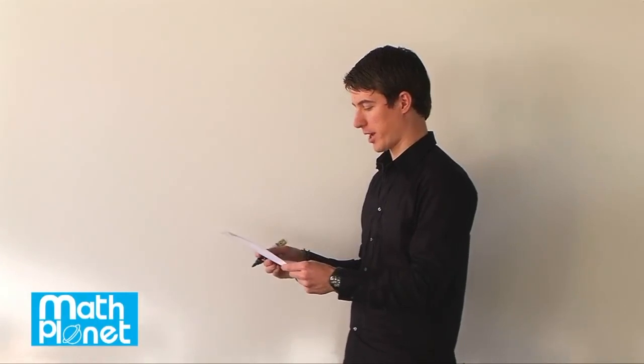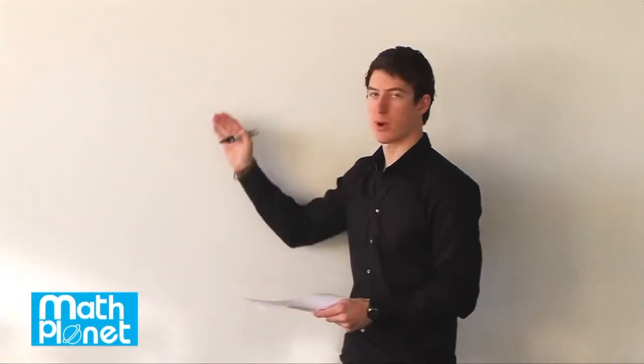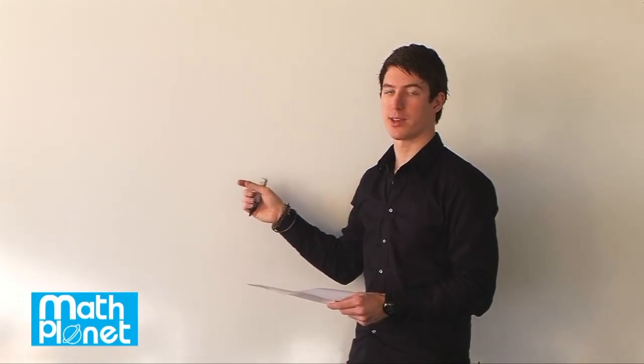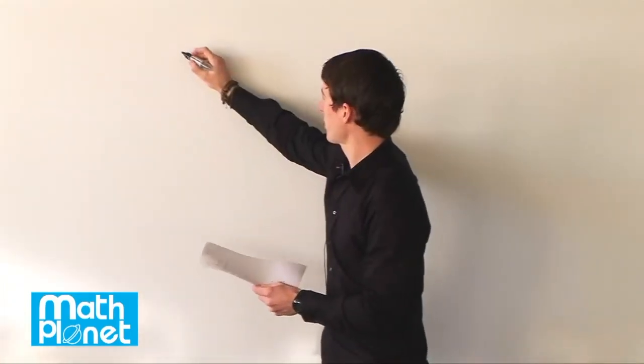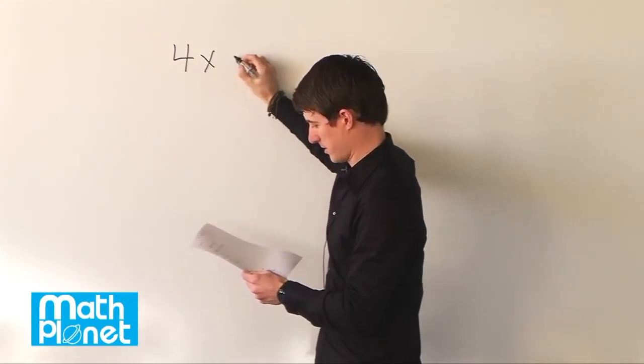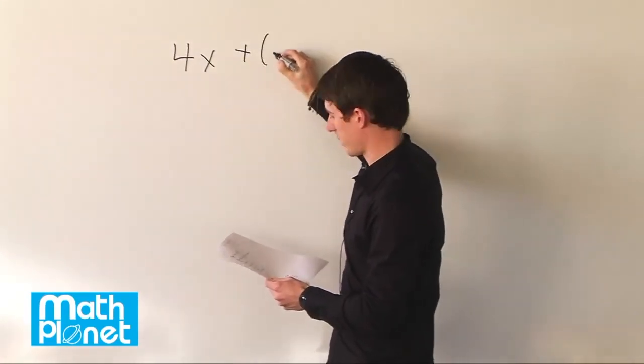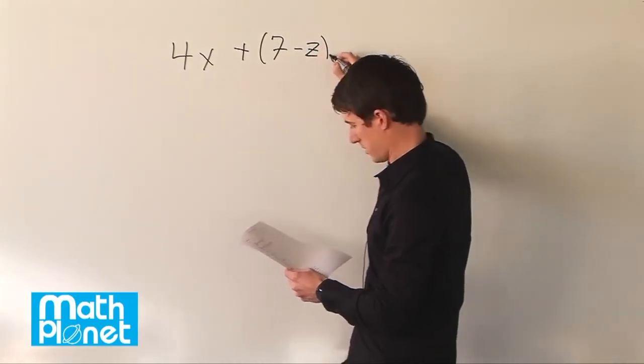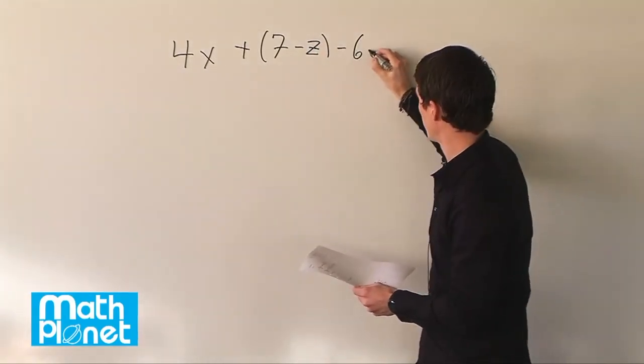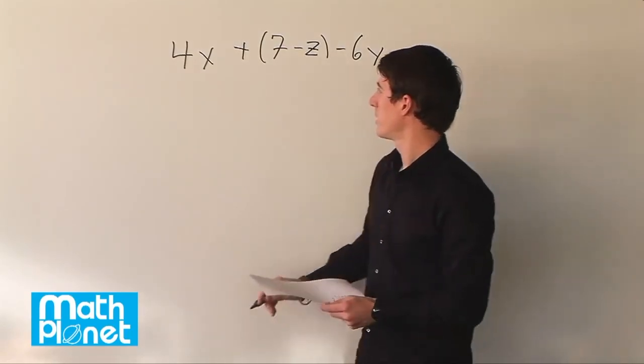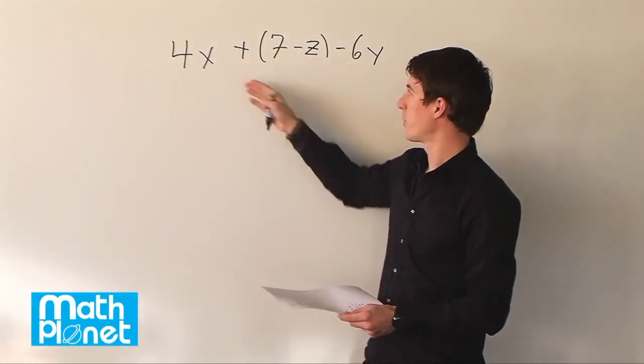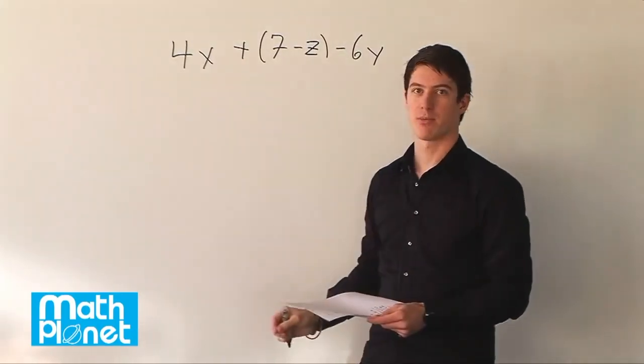Here we have an algebraic equation, rather an expression that we want to evaluate for different values of x, y, and z, and see what we get. The expression is 4x plus quantity 7 minus z minus 6y. Now if we're given values for x, z, and y, then we can evaluate this expression to some numerical value.